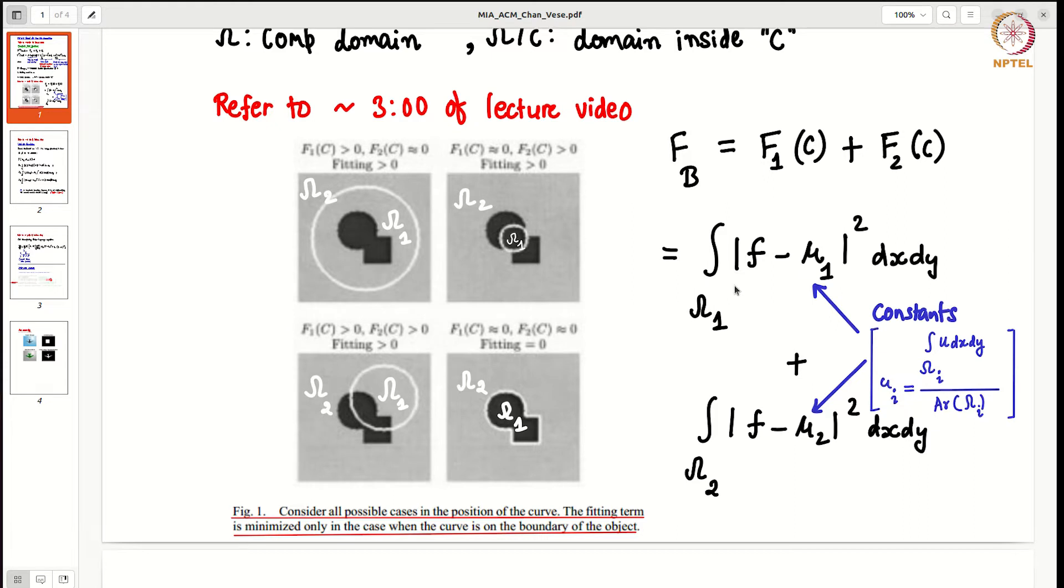I am taking a simple example to just explain what he taught there. For example if you have an image like this, we have an object here shown in black color, and we want to segment it from its surrounding which is in white color. This white line is the curve C. Within C we have omega 1 and outside it we have omega 2. We consider all the possible cases for the position of curve.